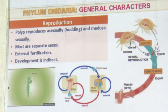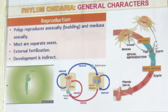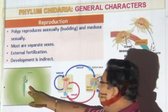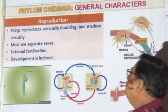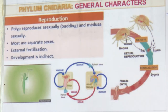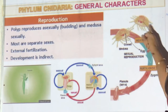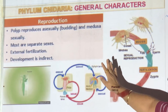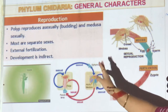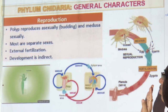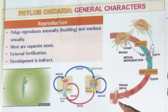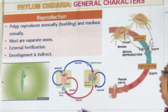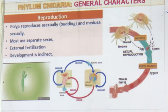Reproduction in Cnidaria involves two stages: polyp and medusa. The polyp is the attached stage that gives buds — you can see small buds come out of the body. Medusa is free-swimming and gives rise to the next generation sexually. They are mostly dioecious — male and female mostly separate. Fertilization is external, sperm and eggs released into water. Development is indirect with a planula larva — don't forget planula for your MCQ.